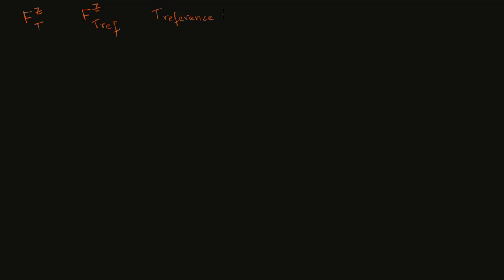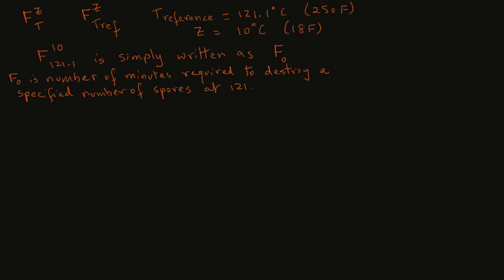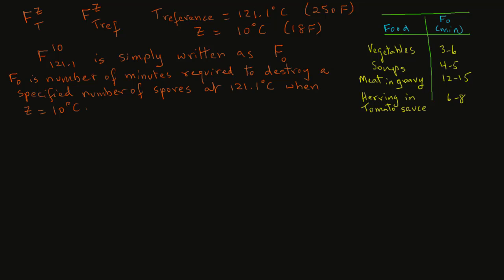It is very common in thermal processing that we use a reference temperature of 121.1 degrees C, which is equivalent to 250 degrees Fahrenheit, and z for the microorganism as 10 degrees C, which is equivalent to 18 degrees Fahrenheit. This particular F value where we have a z of 10 degrees C and a reference temperature of 121.1 degrees C is simply written as F with a subscript 0. We normally call this F0. So F0 is the number of minutes required to destroy a specified number of microbial spores at 121.1 degrees C when z for that microbial spore is 10 degrees C.